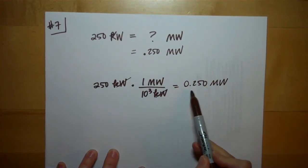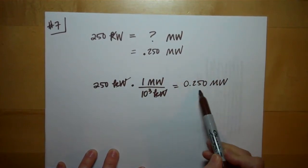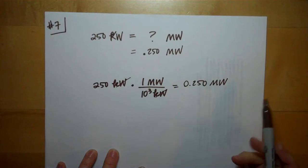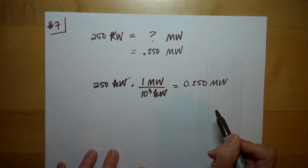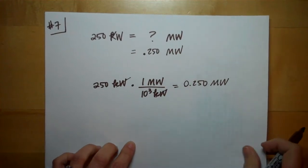So, our wind turbine produces only .25 megawatts versus a thousand megawatts produced by the nuclear power plant. That's a big difference.